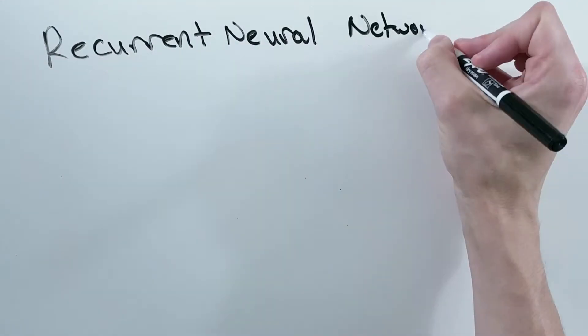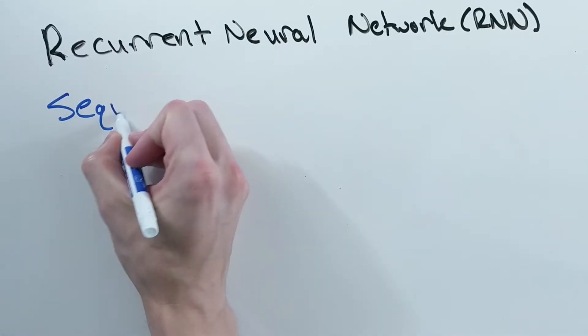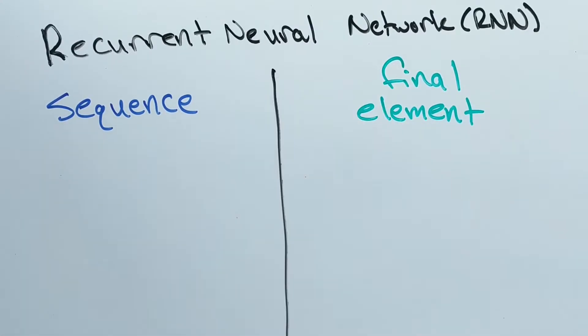A recurrent neural network can output one of two things. It either outputs the whole sequence, or it outputs just the final element of the sequence.